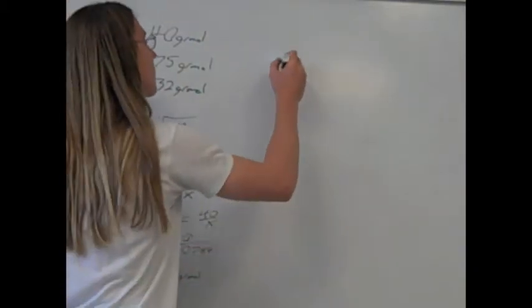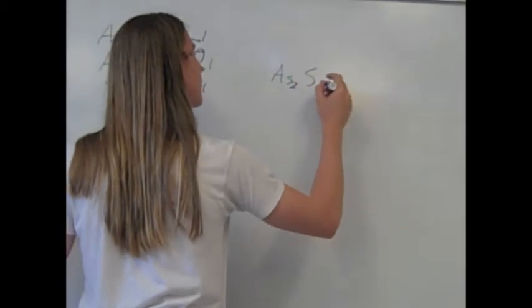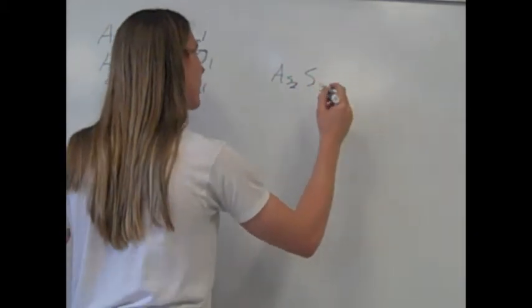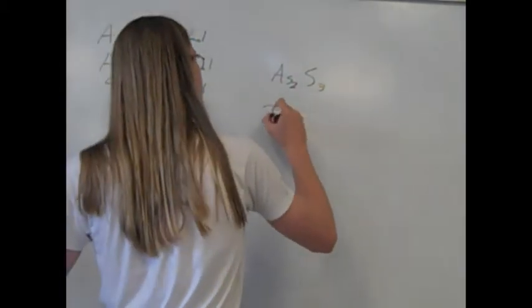Now, we also know that because arsenic is 3+ and sulfur is 2-, that these are going to bond in the empirical formula As2S3. This empirical formula has an empirical mass of